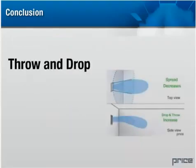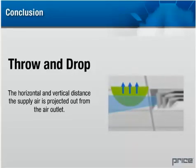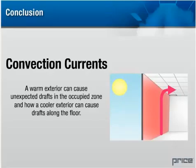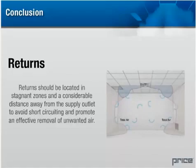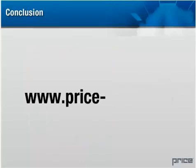We've also looked at throw and drop — the horizontal and vertical distances the supply air is projected from the air outlet — and how spread and surface effect influence them. We touched on convection currents and how a warmer exterior can cause unexpected drafts in the occupied zone, while a cooler exterior can cause drafts along the floor. Finally, returns should be located in stagnant zones and well away from the supply outlet to avoid short circuiting. For more detail, refer to the air outlet selection section, the Price catalog, or visit www.price-hvac.com.